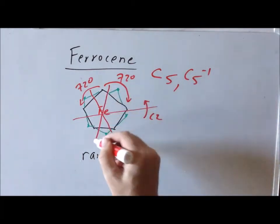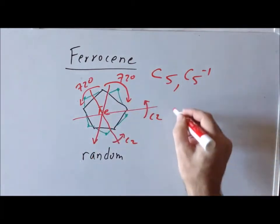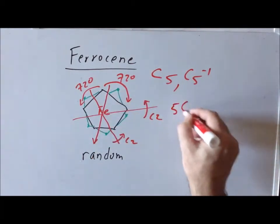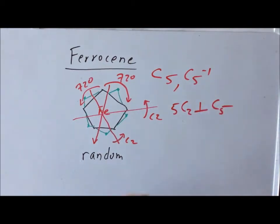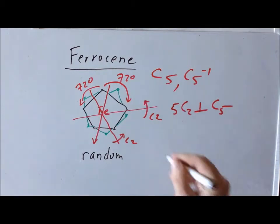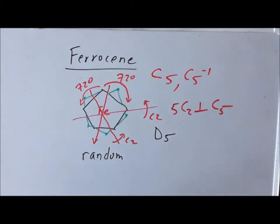We notice that we have five C2s that are perpendicular to the C5. That tells us we have a D5 group. Now the only question is which D5 group — so to assess that, we need to look for mirrors.